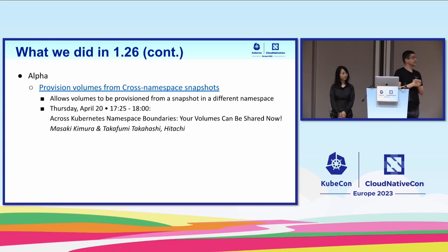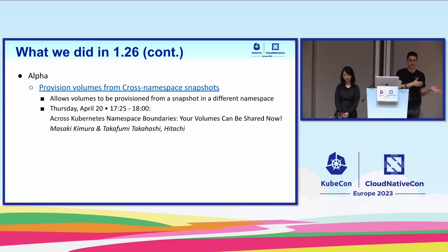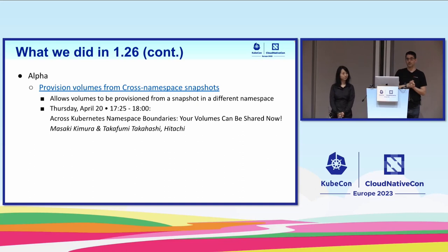As alpha in 1.26, you can provision volumes across namespaces, either from other volumes like cloning or from snapshots. Tomorrow there will be a talk by Masaki and Takufami — please go there if you are interested.